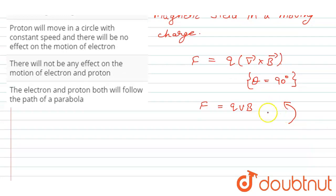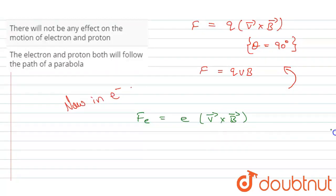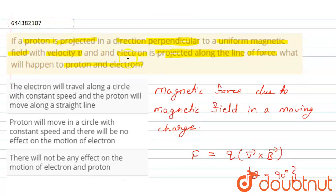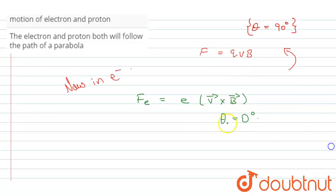Now in the case of electron, the electron Fe will be equal to e into v cross B, and here the theta will be equal to zero degrees because the electron is projected along the line of force. It means here the value of theta is zero degrees.